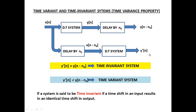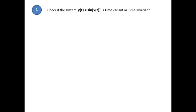A system is said to be time invariant if a time shift in the input results in an identical time shift in the output. That type of system is called time invariant.